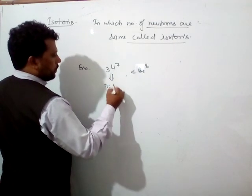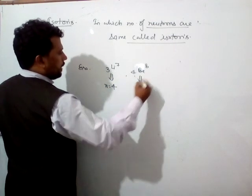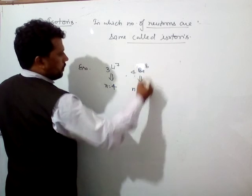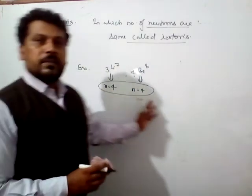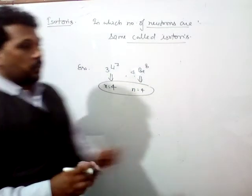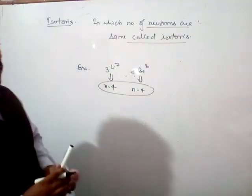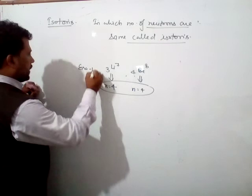We can also solve another example. So in both cases number of neutrons remains same, and we can also solve another example.